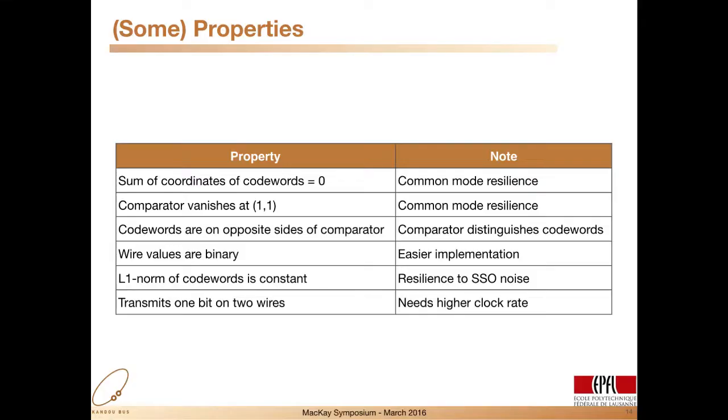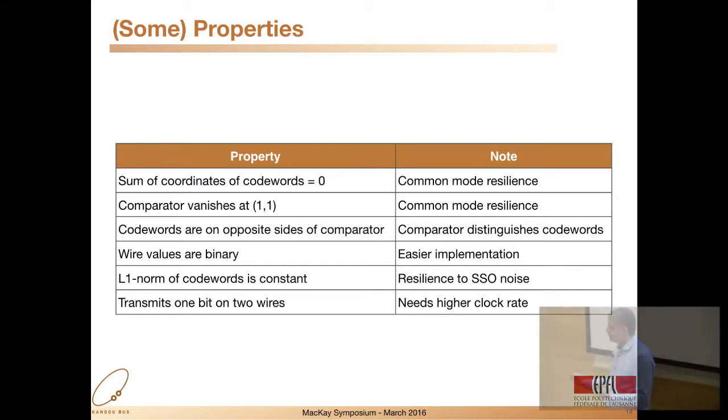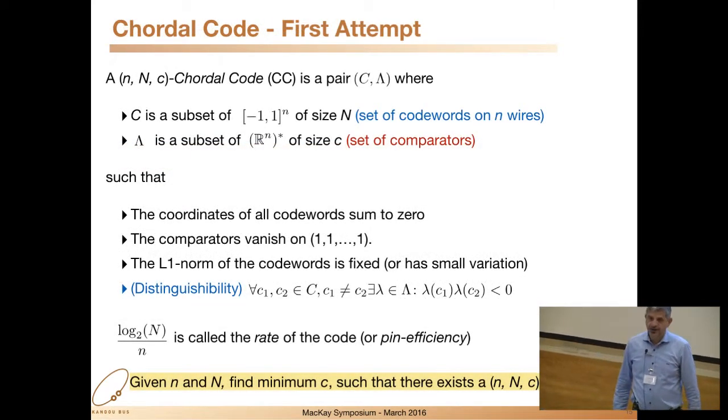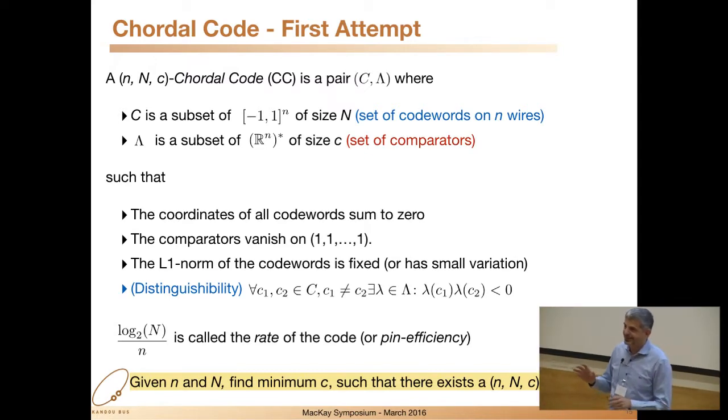The way I want to define the code is these points in the space and the comparator that distinguishes these two points. That will be my definition of a code. Then you start looking into it and see what makes differential signaling interesting. It turns out what makes it interesting is that the sum of the values is zero. And there are a bunch of other things that you start making a laundry list of all the interesting properties of differential signaling and why they're interesting. Because you want to generalize.